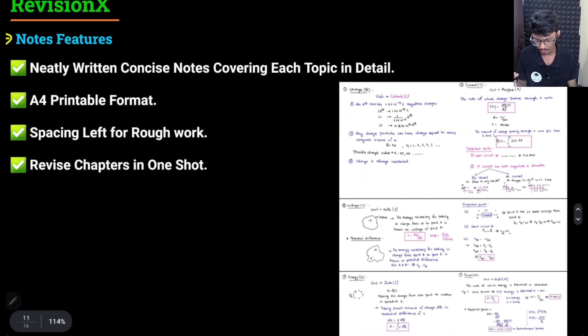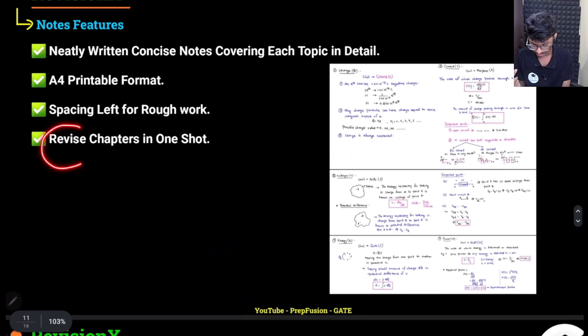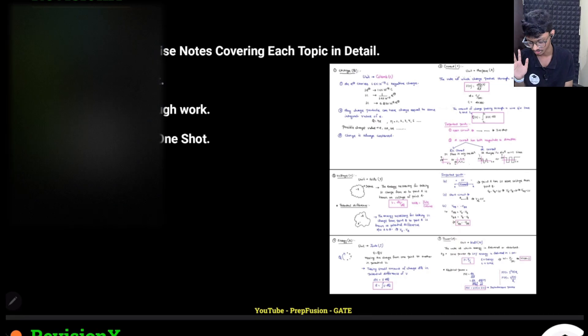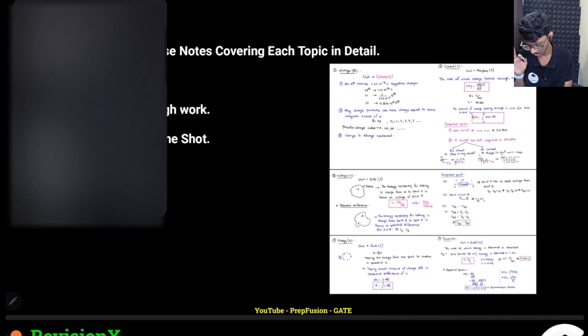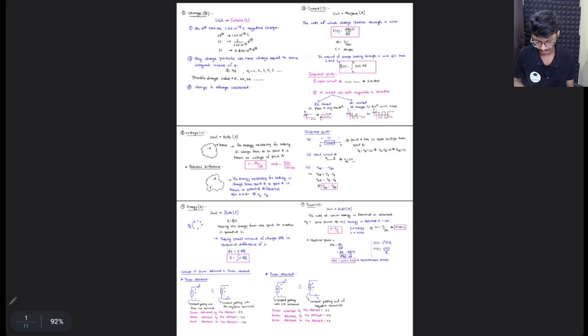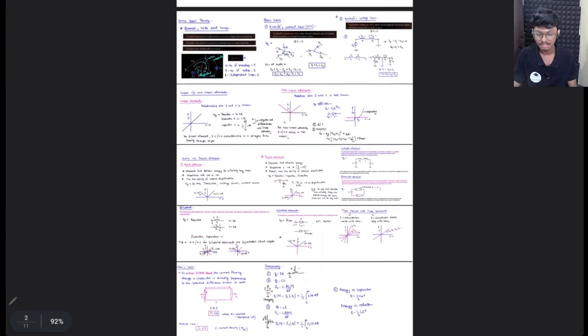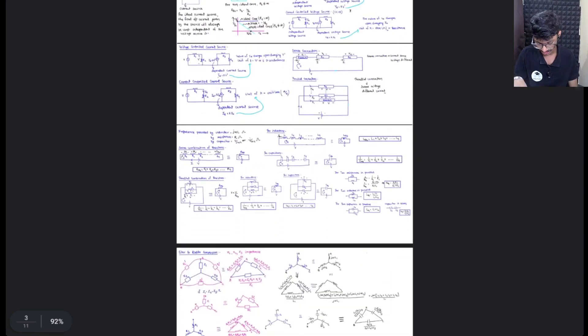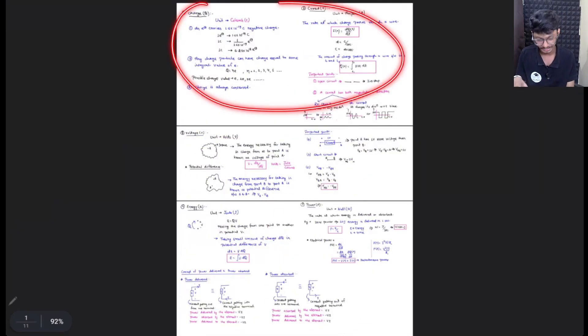So I can show you a demo actually. You can revise the chapters in a single shot. With each notes you can revise the chapter in a single shot. So I can show you a basic example. Here you see that these are the Network Analysis DC part. So this has been covered, you can see every single. So first is the Basics for Network.